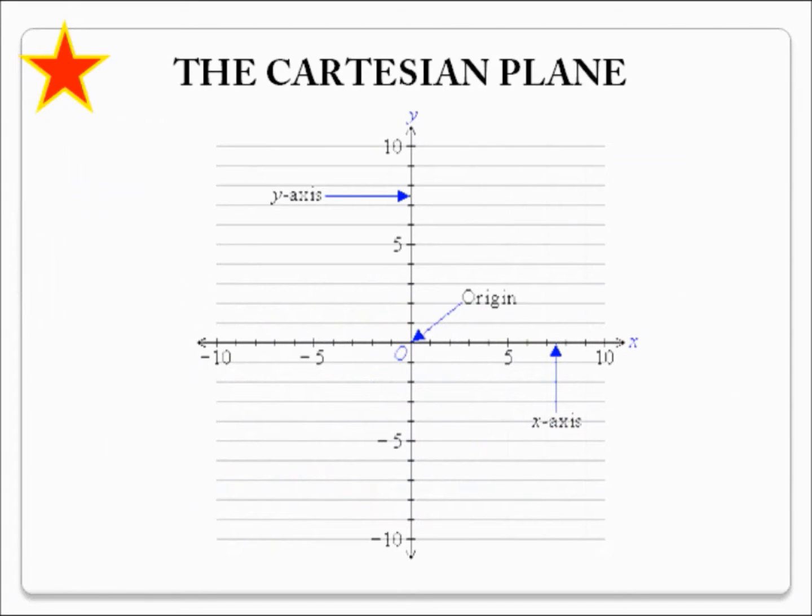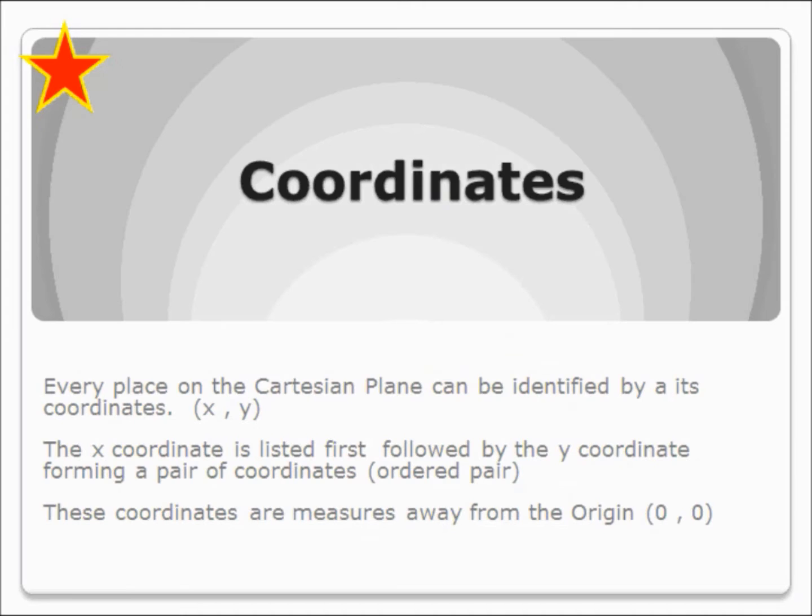The Cartesian plane has a number of features that you will need to be familiar with. Firstly, if you have a look at this picture which you should copy down, you can see that there are an axis across the horizontal called the X axis and there is also an axis going vertically called the Y axis. We start from the very centre which is called the origin and all positions on this Cartesian plane is measured from the origin.